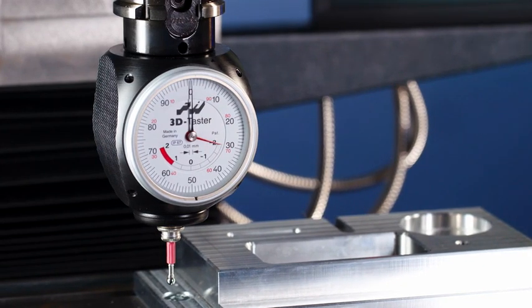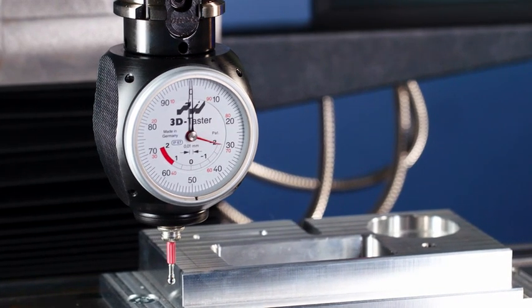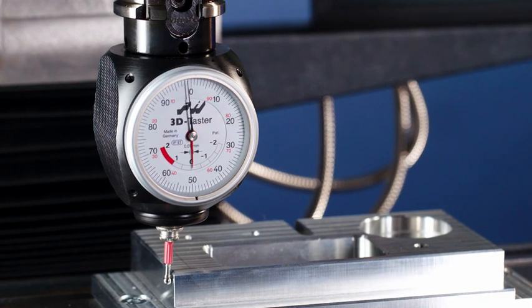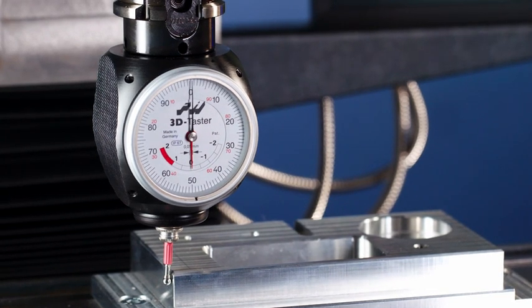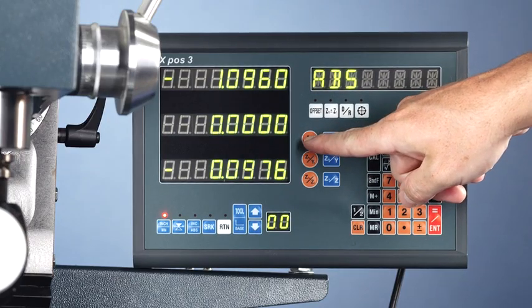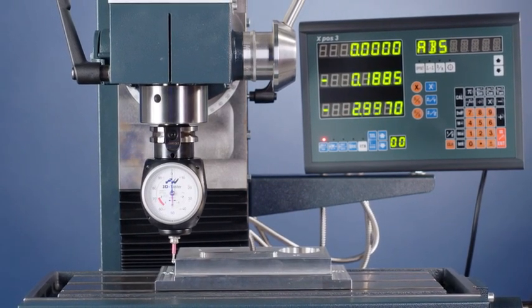Setting X, Y, Z is as easy as 1, 2, 3. To locate in X, position the probe next to the part on the side of your choice. Next, move the part into the direction of the probe tip. When the black and red hands are both positioned at zero, the edge of the part is in alignment with the center axis of the machine. You can now define X0 on your control or coordinate display.